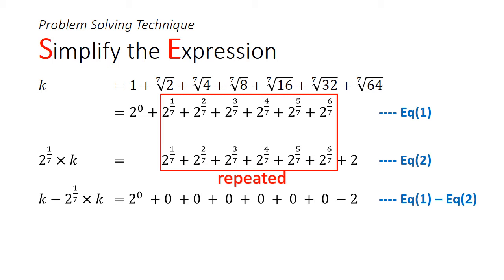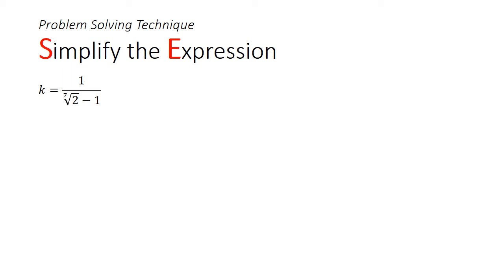On the left hand side, you'll have k minus 2 to the power of 1 over 7 times k, and on the right hand side, you'll get 2 to the power of 0 minus 2. With some rearrangements, we can make k the subject. k will be equal to 1 over the seventh root of 2 minus 1. But we're still not done. We somehow still need to force out a 1 plus 1 over k, which we could do by using substitution.